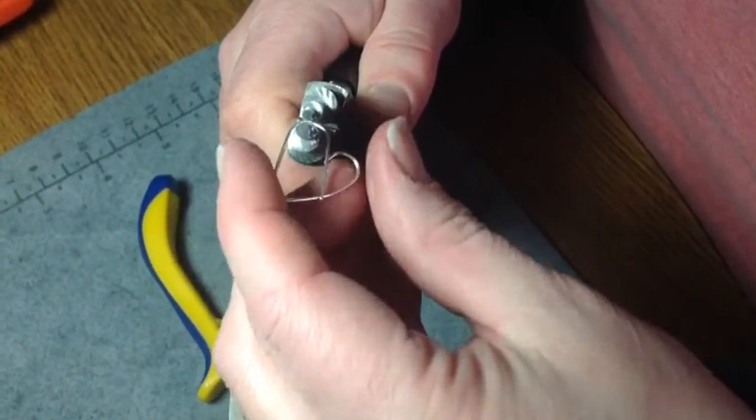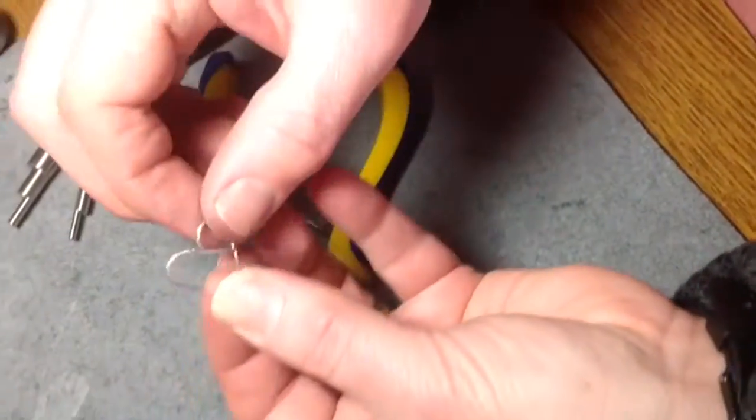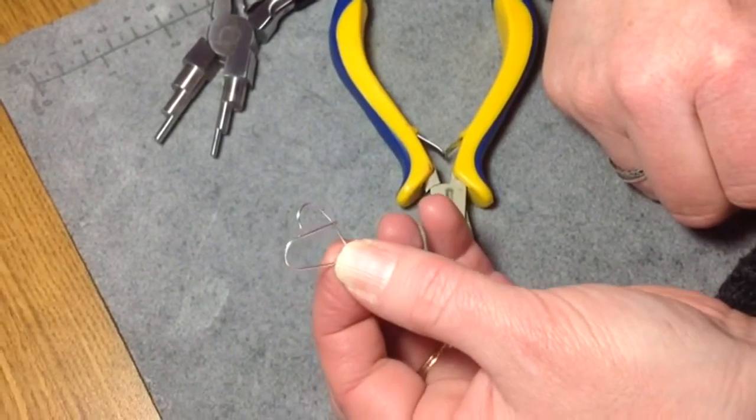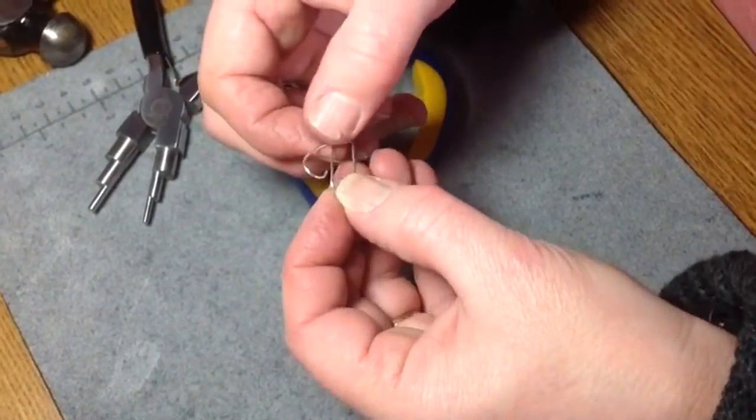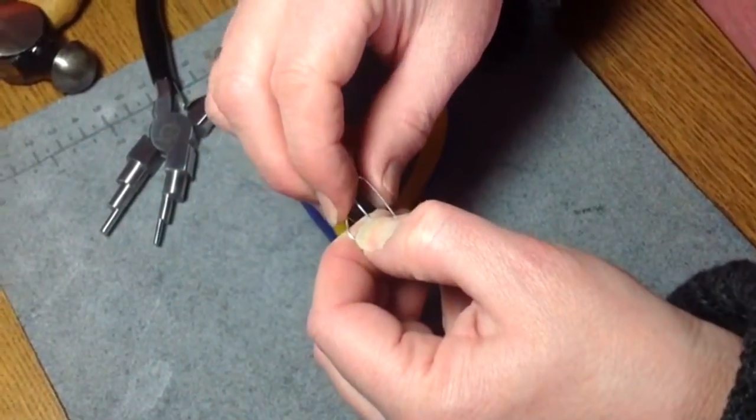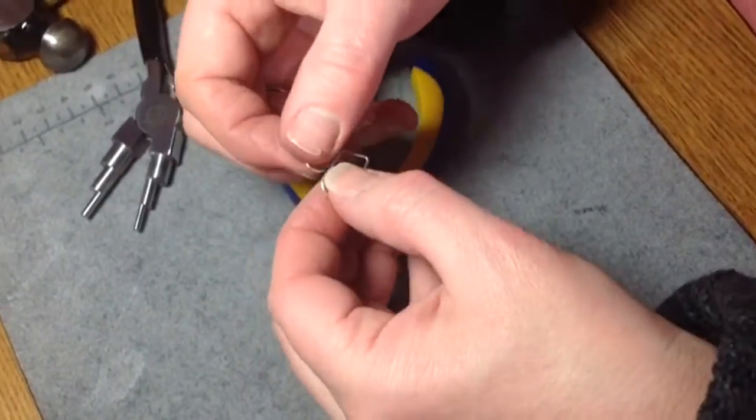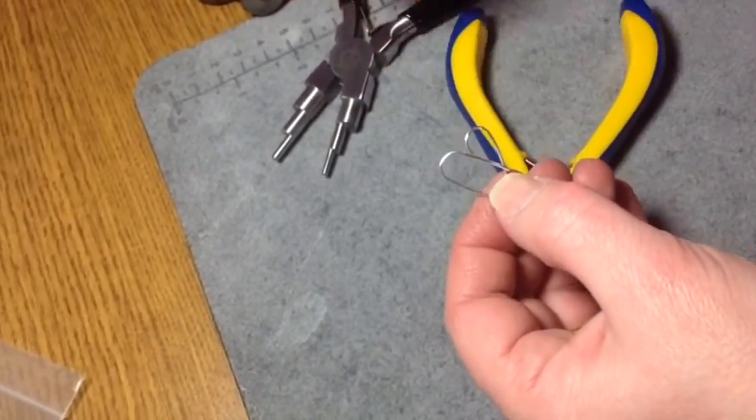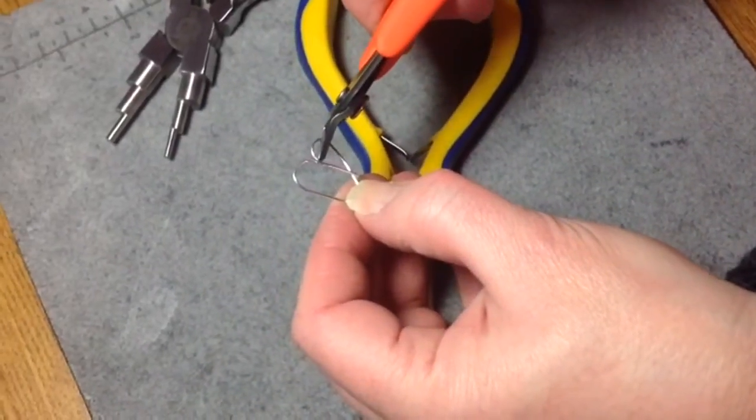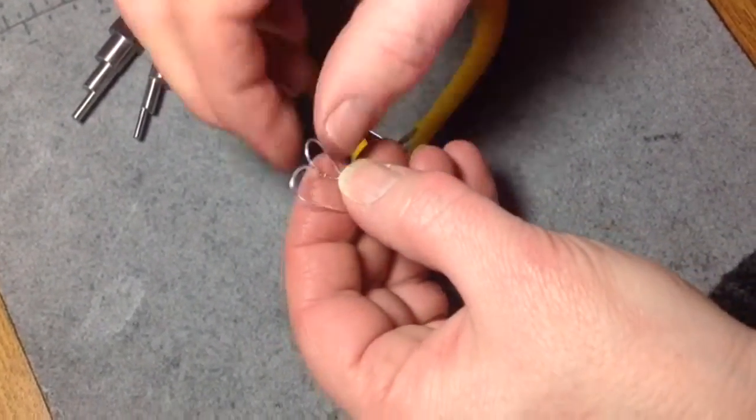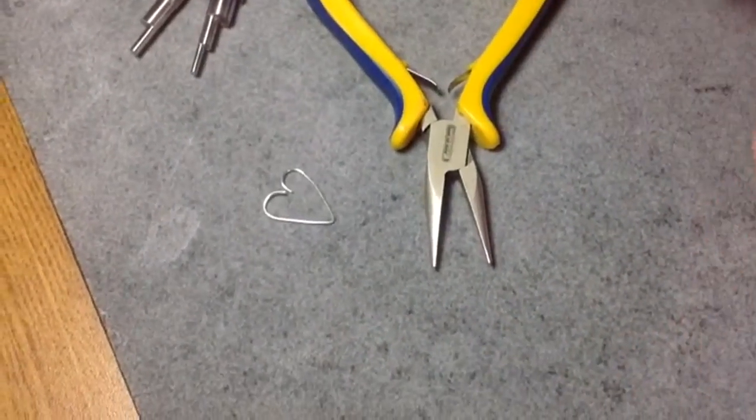And as I do that, I'm sort of adjusting it, so I have something like this. Before I do any cutting, I just want to make sure that it's kind of the way I like it, so I'm just adjusting a little bit. And then now that I have it like that, I'm going to go right down and cut right there. So so far, that's what I have.